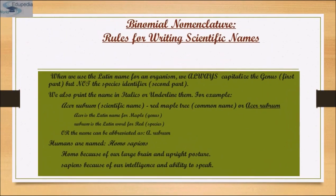The species name is usually a Latin description of some important characteristic of the organism. When writing a scientific name, we always capitalize the genus but not the species identifier, and we print the name in italics or underline it. For example, Acer rubrum means red maple tree — Acer is the Latin name for maple (genus) and rubrum is Latin for red (species). Humans are named Homo sapiens — Homo refers to our large brain and upright posture, and sapiens refers to our intelligence and ability to speak.